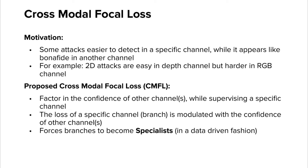Ideally, what we want is that when a branch is unsure, it should give scores closer to 0.5, as opposed to creating very confident mistakes. In the proposed cross-model focal loss, the main idea is to factor in the confidence of other channels while supervising a specific channel. The loss function of a specific channel is modulated with the confidence of other channels, which prevents forcing individual channels to overfit.